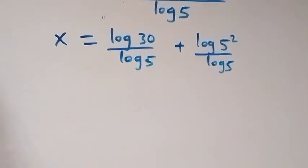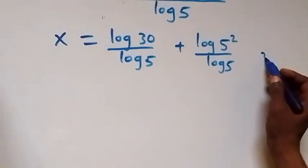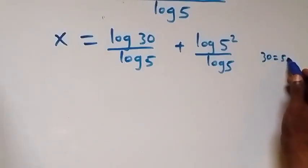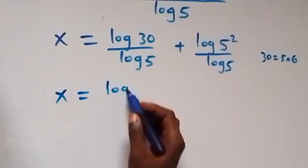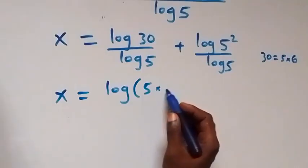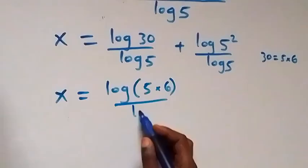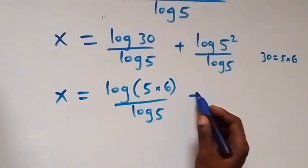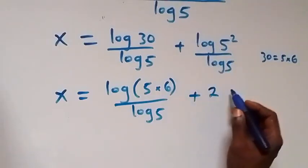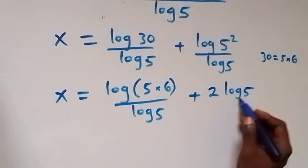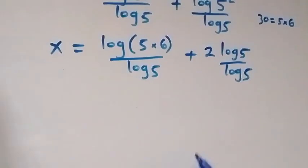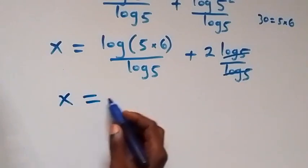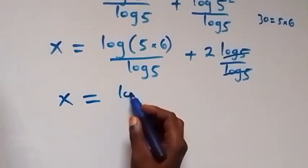From here, we can rewrite 30 as 5 times 6. This becomes x equals log of 5 times 6 over log 5, plus — from the power rule — 2 log 5 over log 5. Log 5 cancels log 5, and we have 2 left.